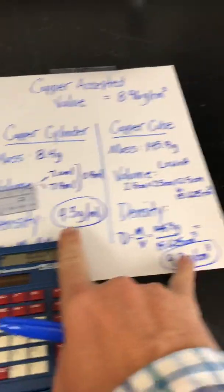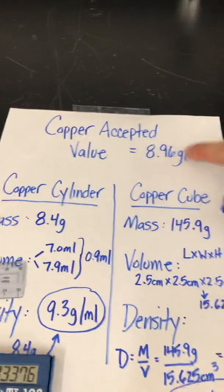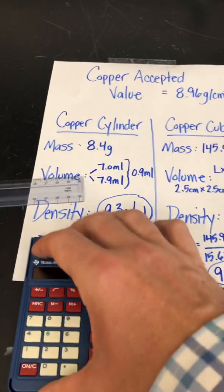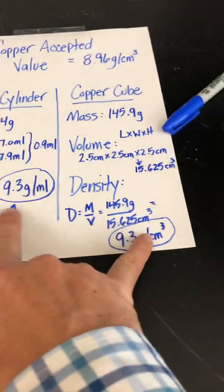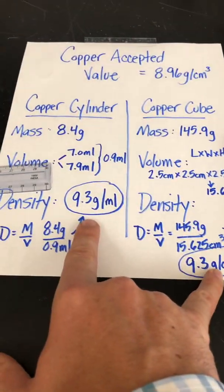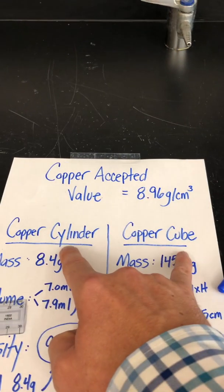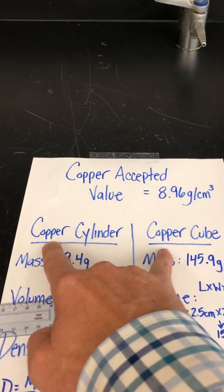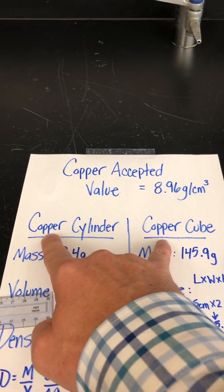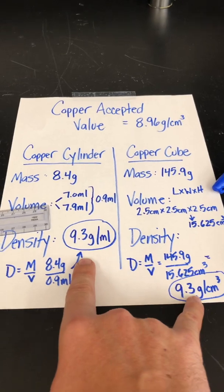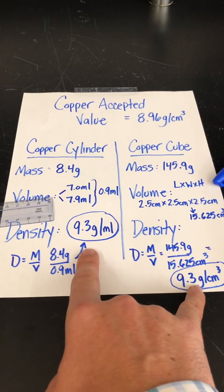Now my calculations are definitely a little bit off from the accepted value of what copper actually should be. But what I like about this is that the numbers that I came up with are identical. The fact that the cylinder and the cube are completely different shapes and completely different sizes, the fact that they are the same exact material and the fact that the densities did not change, that indicates that is going to be a static relationship.